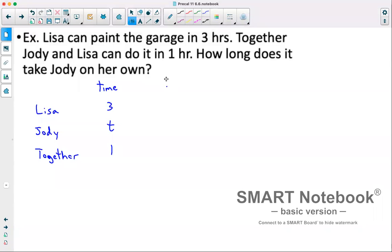Once again, we'll do how much, except instead of per minute, we'll do per hour. If Lisa can do the whole thing in 3 hours, that means she's doing 1/3 of it every hour. Jodi, it'd be 1 over T. And together, it'd be 1 over 1, which is simply 1.